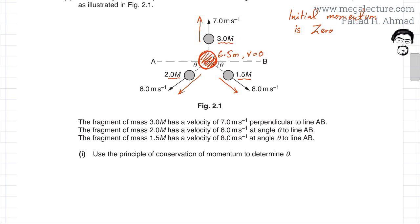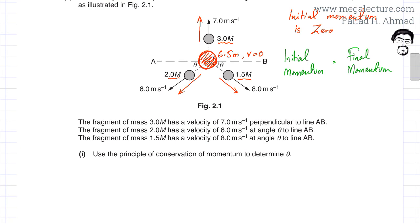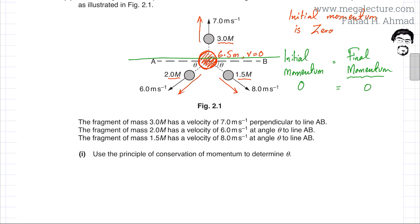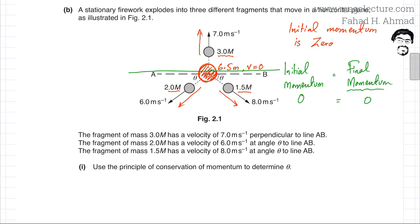Since initial momentum equals final momentum by conservation of momentum, and the initial momentum is zero, the final momentum must also be zero. Because momentum is a vector quantity, I'll divide the final momentum into horizontal and vertical components. Both the horizontal and vertical components of the total final momentum must each equal zero.